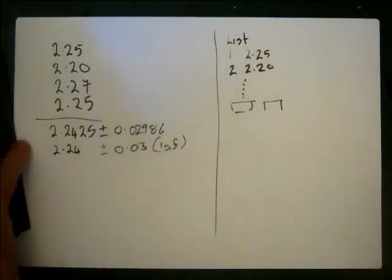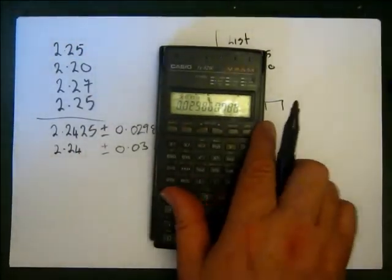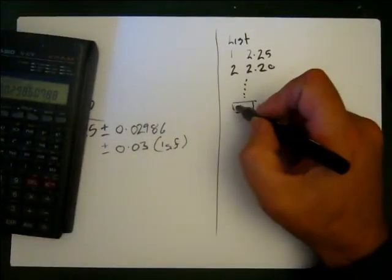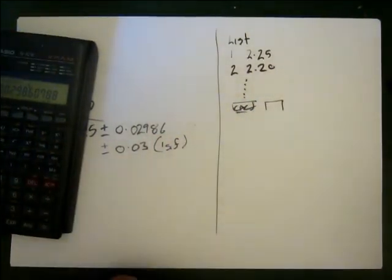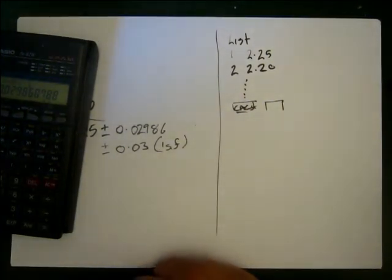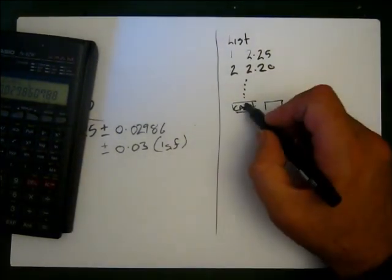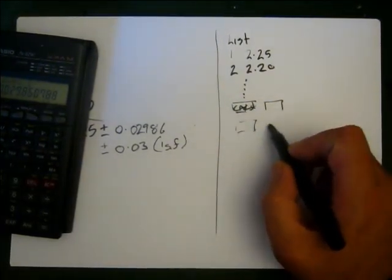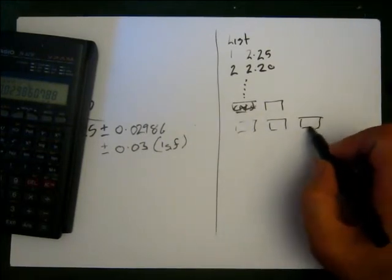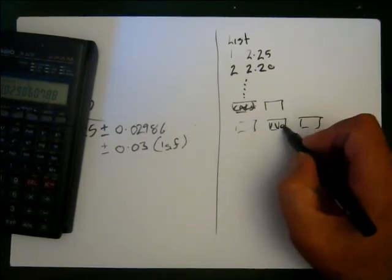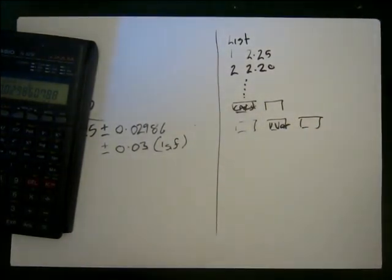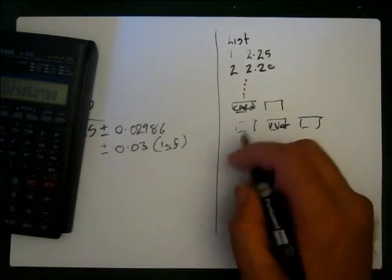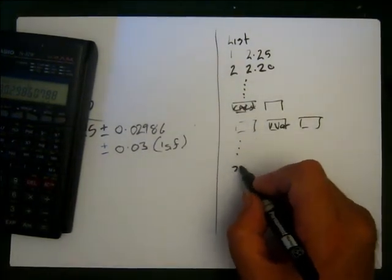those little buttons there above the screen, one of them should say calc. And when you hit the calc button then you'll get another row of buttons that pop up, and one of them should say 1 var. And when you hit that then you'll get a whole lot of data and then you'll get an x bar,